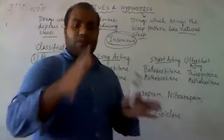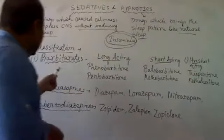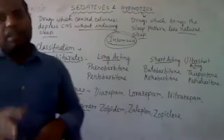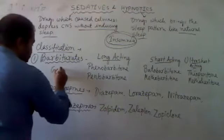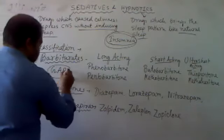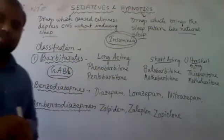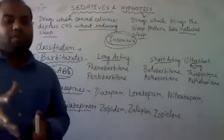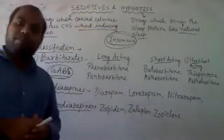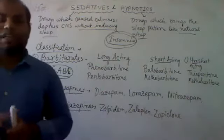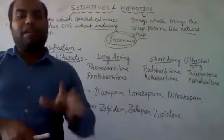If we talk about the mechanism of barbiturates, they generally act on the GABA-A receptor. GABA stands for gamma-aminobutyric acid. It is an inhibitory neurotransmitter that acts on cells and creates CNS depression.